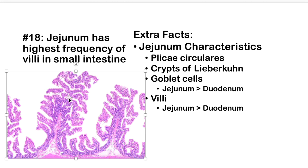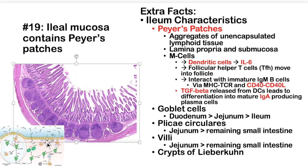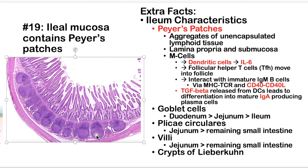Fact 19: The ileum mucosa contains Peyer's patches — aggregates of unencapsulated lymphoid tissue in the lamina propria and submucosa. Comparing the three small intestine segments: goblet cells are most prominent in the duodenum (where Brunner's glands are), somewhat less in the jejunum, and least in the ileum. Plicae circulares and villi are most prominent in the jejunum. Peyer's patches are specific to the ileum.